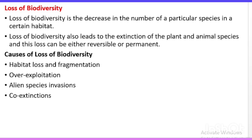The second cause is over-exploitation of species. Unsustainable use of ecosystems and over-exploitation of biodiversity are major reasons behind biodiversity loss. Over-hunting, poaching, over-fishing, and over-harvesting of plant products can quickly decline biodiversity. Changing consumption patterns of humans are often cited as the key reason for unsustainable exploitation of natural resources. Many species became extinct in recent times, like Steller's cow, due to over-exploitation by humans.